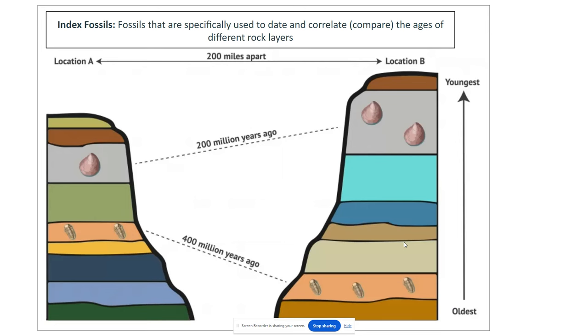Special fossils are useful for this, and we call these index fossils. Index fossils are fossils that are specifically used to date and correlate — or compare — the ages of different rock layers.